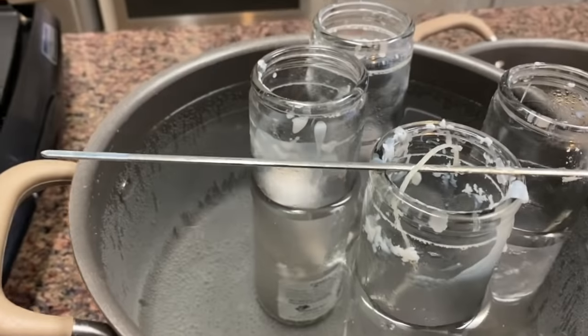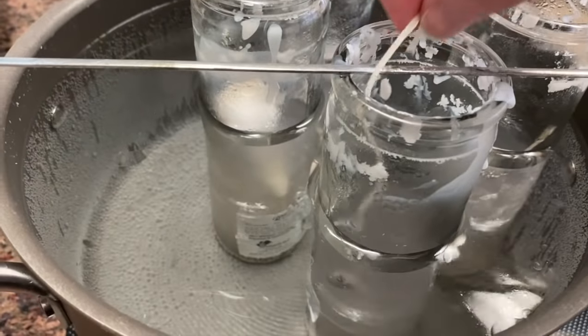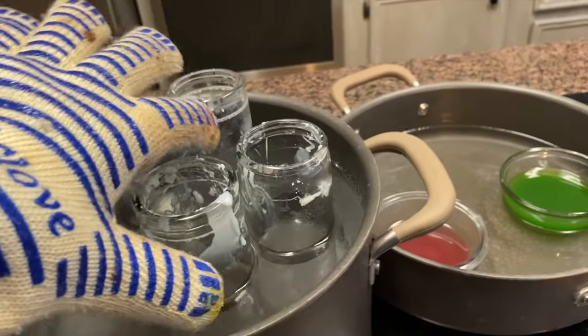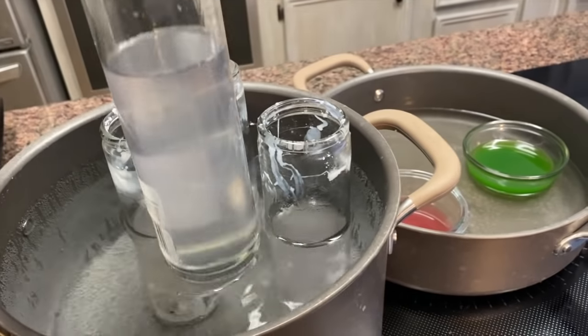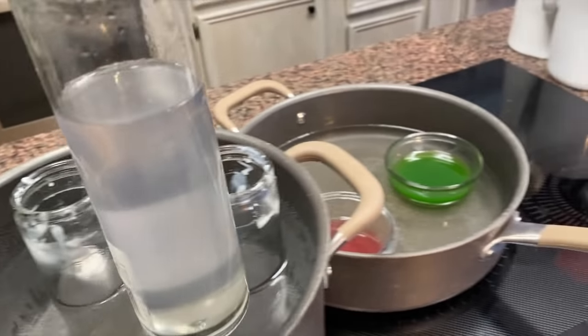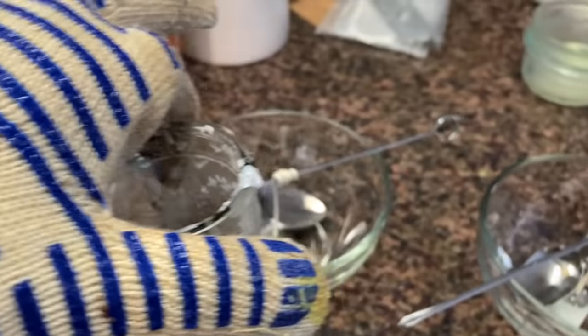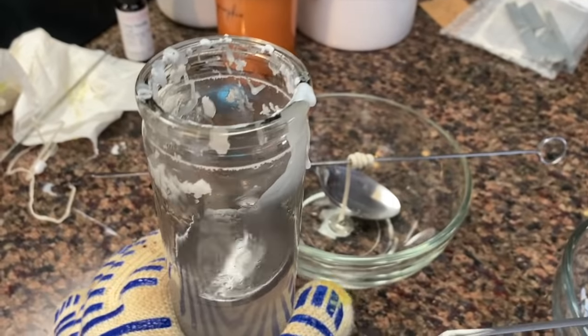Now that the wax is all melted, you need to fish out the wicks out of these, then grab one of the candles and pour it directly into one of the bowls. Then grab a second candle and you're going to pour about three-fourths of the second candle into your bowl.